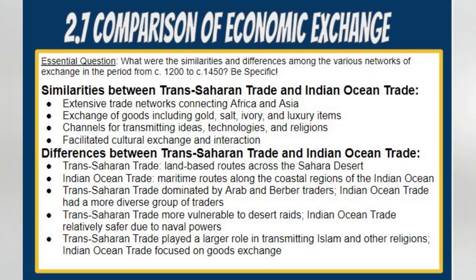Additionally, both networks played a vital part in fostering cultural exchange and interaction among different societies. However, there were significant differences between the Trans-Saharan trade and the Indian Ocean trade. The Trans-Saharan trade predominantly operated through land-based routes stretching across the Sahara Desert, while the Indian Ocean trade thrived along maritime routes encompassing the coastal regions of the Indian Ocean. Moreover, the Trans-Saharan trade was dominated by Arab and Berber traders, whereas the Indian Ocean trade boasted a more diverse range of traders and merchants, including Arabs, Persians, Indians, and Chinese.